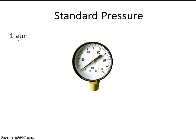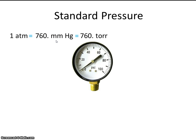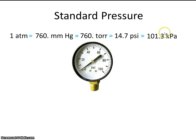You should probably be familiar with all of these because they're all pretty common. One atmosphere is equal to 760 millimeters of mercury — also sometimes called torr, so 760 torr — which is equal to 14.7 psi, which is equal to 101.3 kPa, or kilopascals, which is 1,000 pascals.